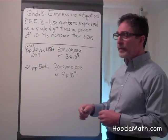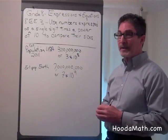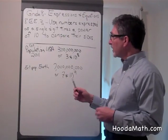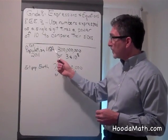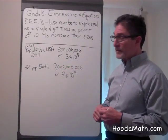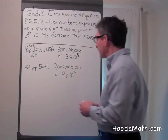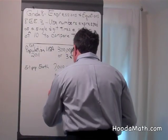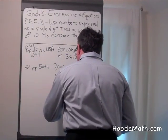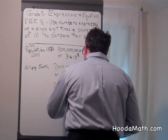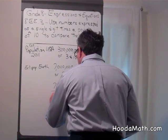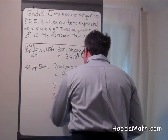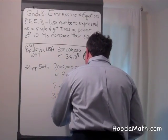If we wanted to know approximately how many times larger the Earth's population was to the population of the United States, we would divide 7 times 10 to the 9th, divided by 3 times 10 to the 8th power.